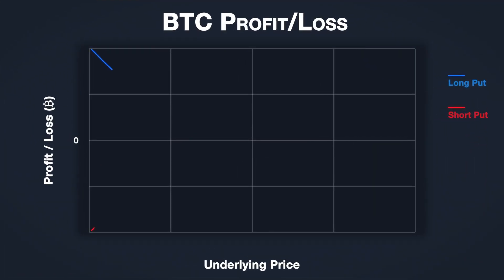It's always useful to know the maximum potential profit or loss of any option position you're thinking of opening. Here we can see the Bitcoin profit and loss chart for a Bitcoin put option. The buyer's P&L is in blue and the seller's P&L is in red. As usual with options, when the option expires worthless, the loss for the buyer is fixed, as is the profit for the seller.